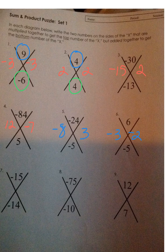Negative 15 and negative 14. If I do 1 and 15, make that a negative: negative 15 plus 1 is negative 14.